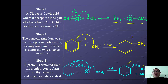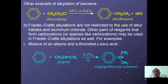Other alkylation examples include: to synthesize ethylbenzene, you use chloroethane with AlCl3 as catalyst to form ethylbenzene.